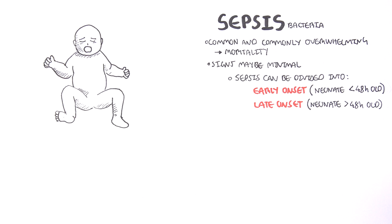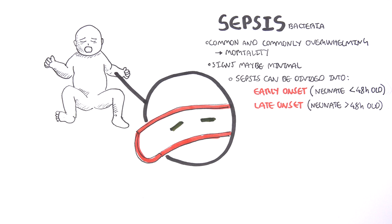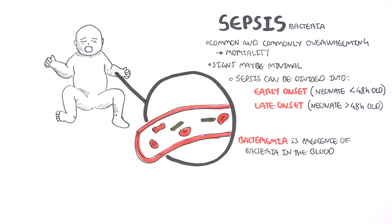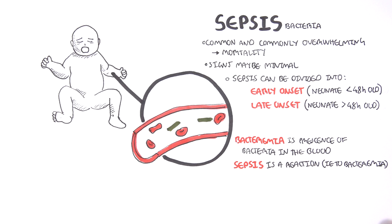Sepsis is often confused with bacteremia. Bacteremia is defined as the presence of bacteria in the blood, whereas sepsis is the response to the bacteria, which includes vasodilation causing hypotension, and tachycardia to compensate and maintain cardiac output.